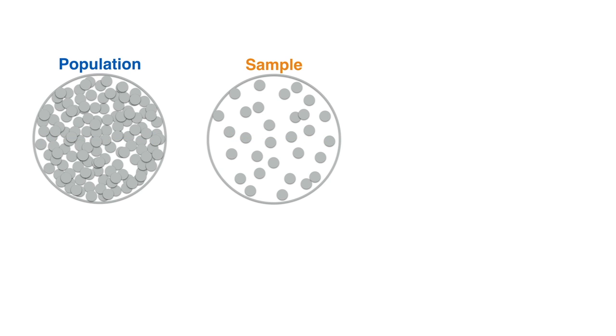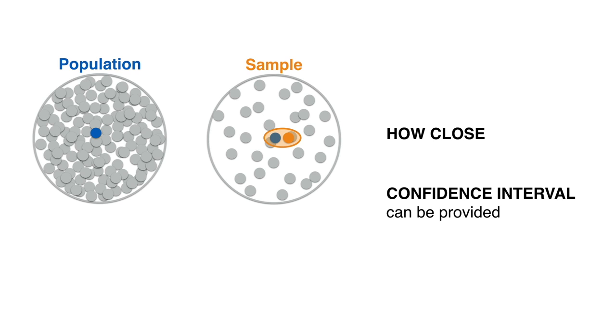A parameter to be estimated is the population mean where information from the sample is used to obtain the sample mean. Not knowing how close this last one is from the population mean, a confidence interval can be provided.